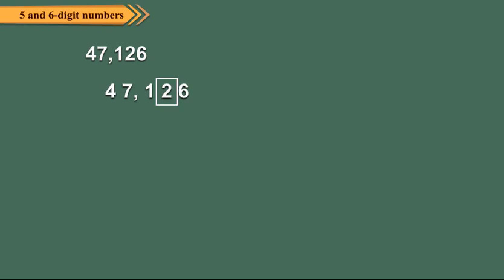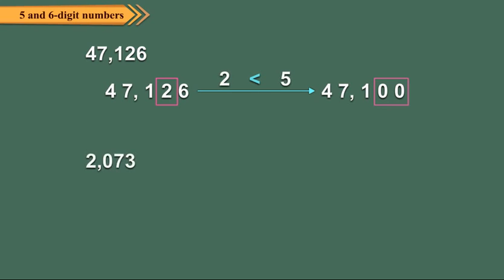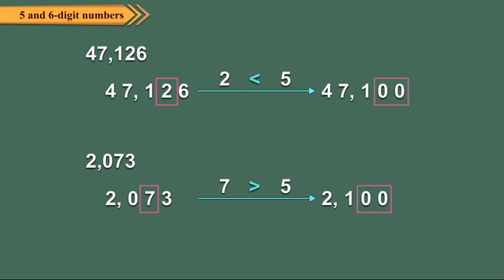In 47126, the tens digit is 2, so we replace the tens and ones digits by 0, giving 47100. To round off 2073 to the nearest hundred, we look at 7, which is greater than 5. So we increase 0 by 1 and replace the tens and ones digits by 0, giving 2100.